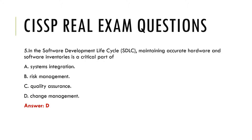Question 5. In the Software Development Life Cycle (SDLC), maintaining accurate hardware and software inventories is a critical part of: a. Systems integration, b. Risk management, c. Quality assurance, d. Change management. Answer: d.